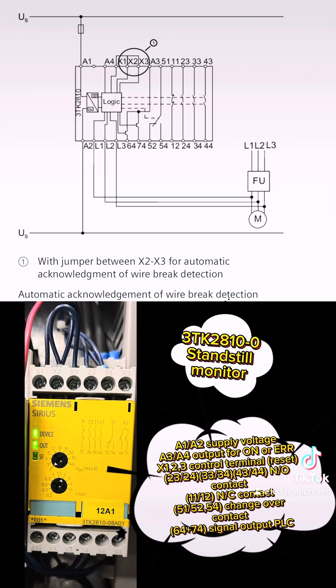Starting off with our supply voltage, you've got your A1 and A2—that's the top and bottom line. Starting with the terminals, you have A3 and A4—that's your output if you're on and your error if you're going to an HMI.